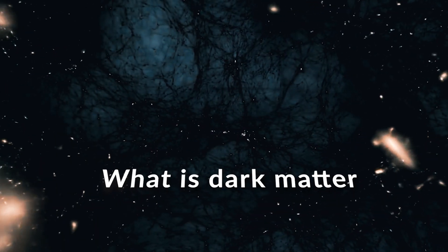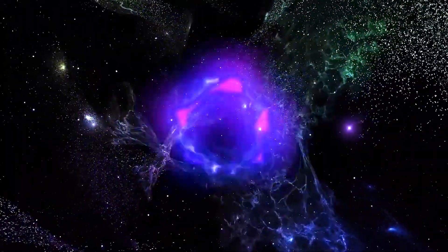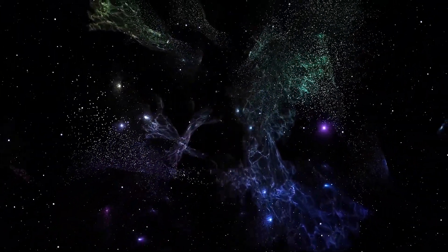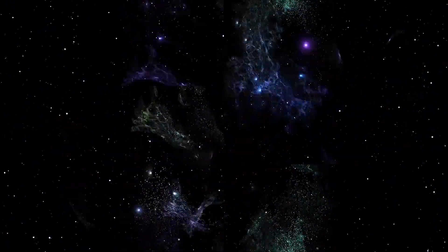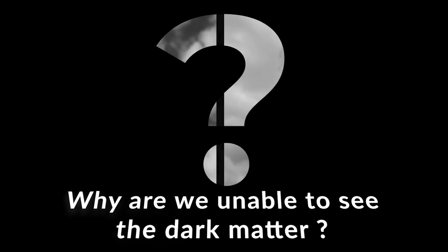So what is dark matter? It's a kind of matter that can't be seen by us. It does mean the matter always stays in the dark. But how can scientists be confirmed about those matters as we are unable to see them? Why are we unable to see dark matter?